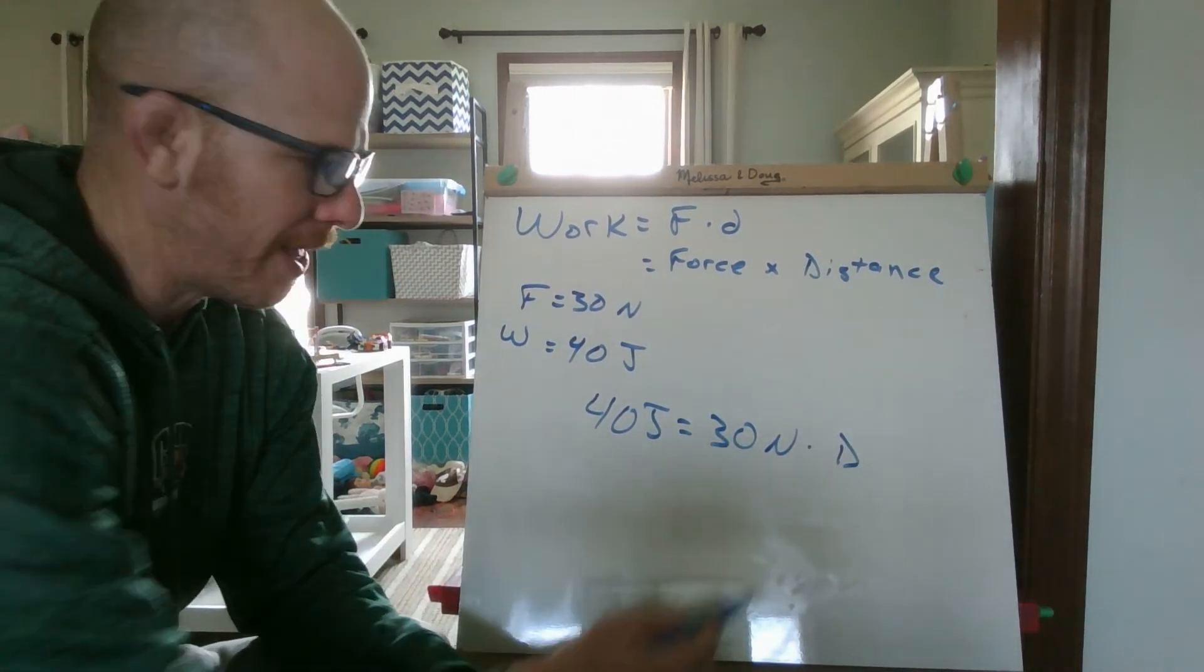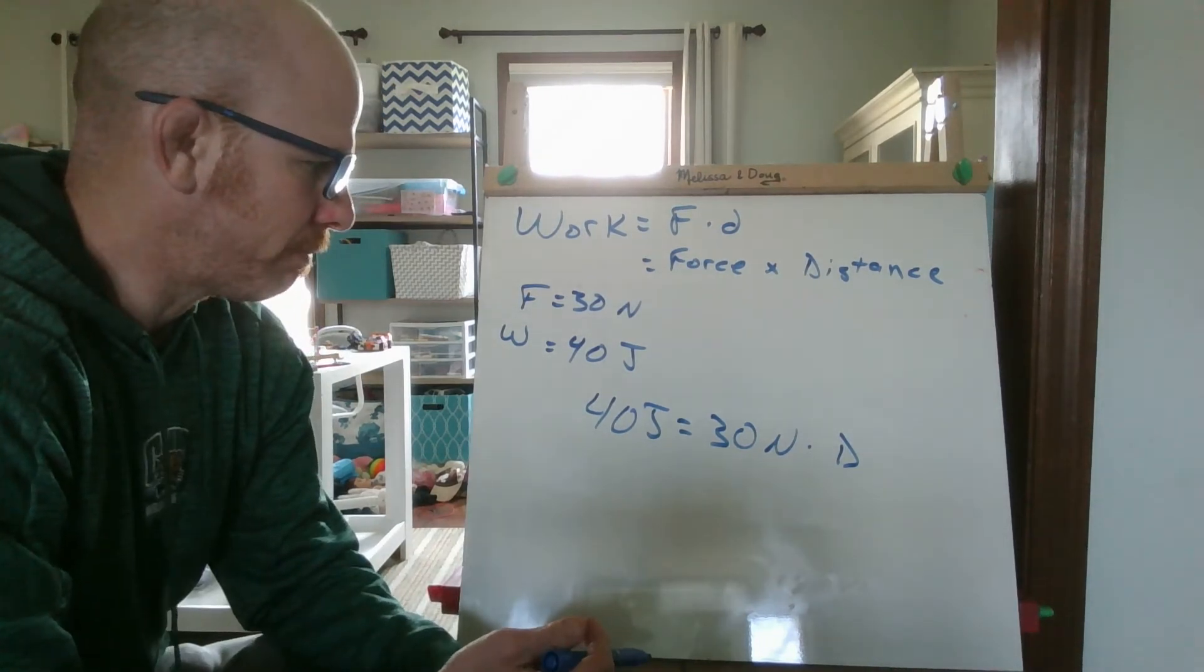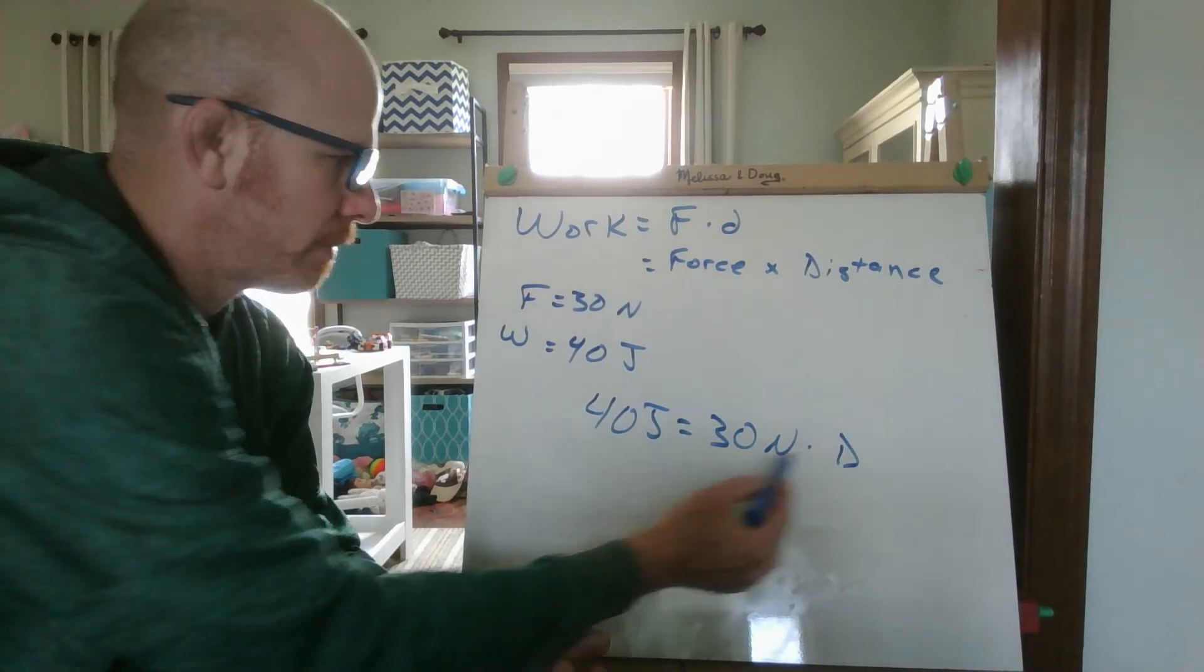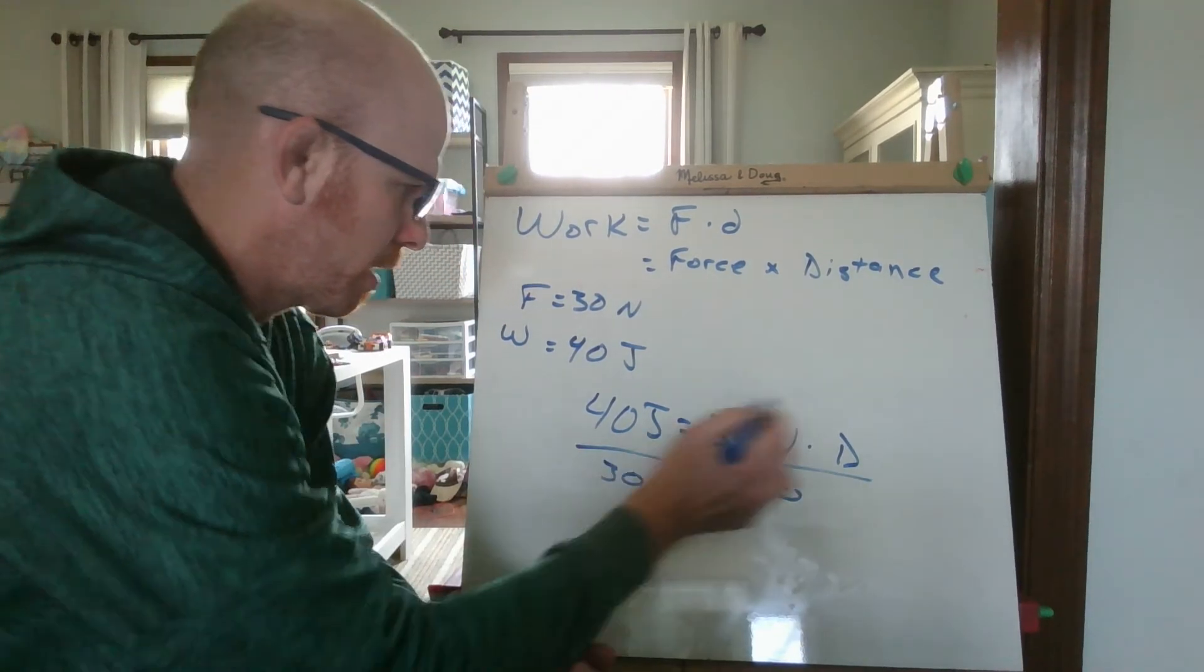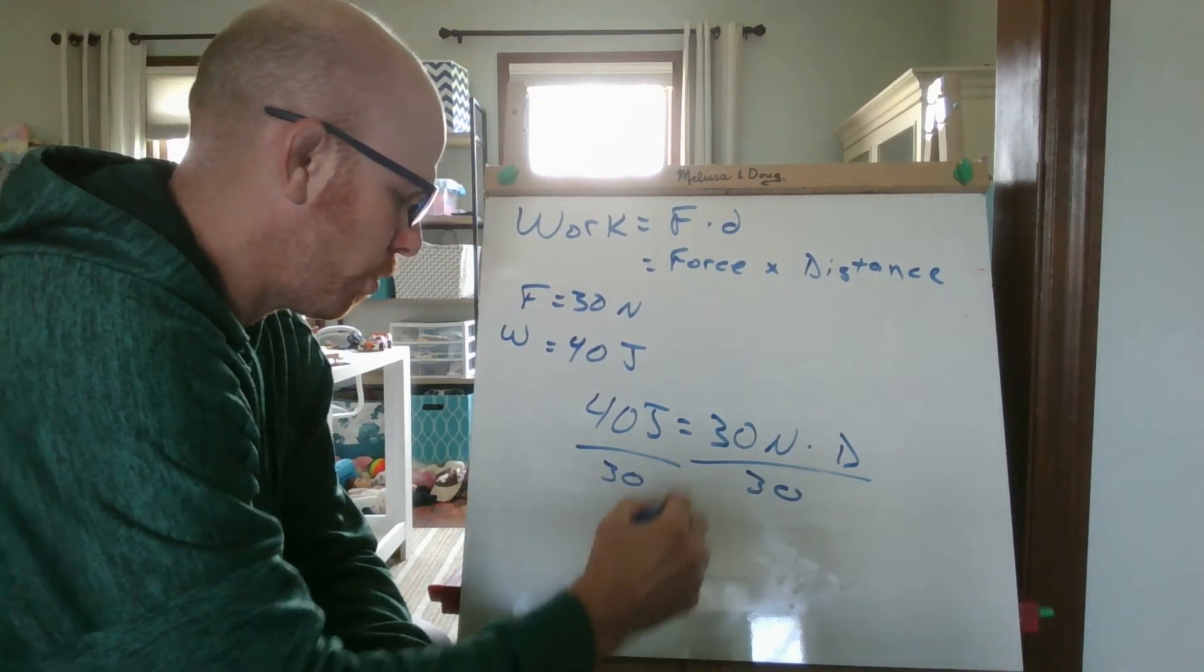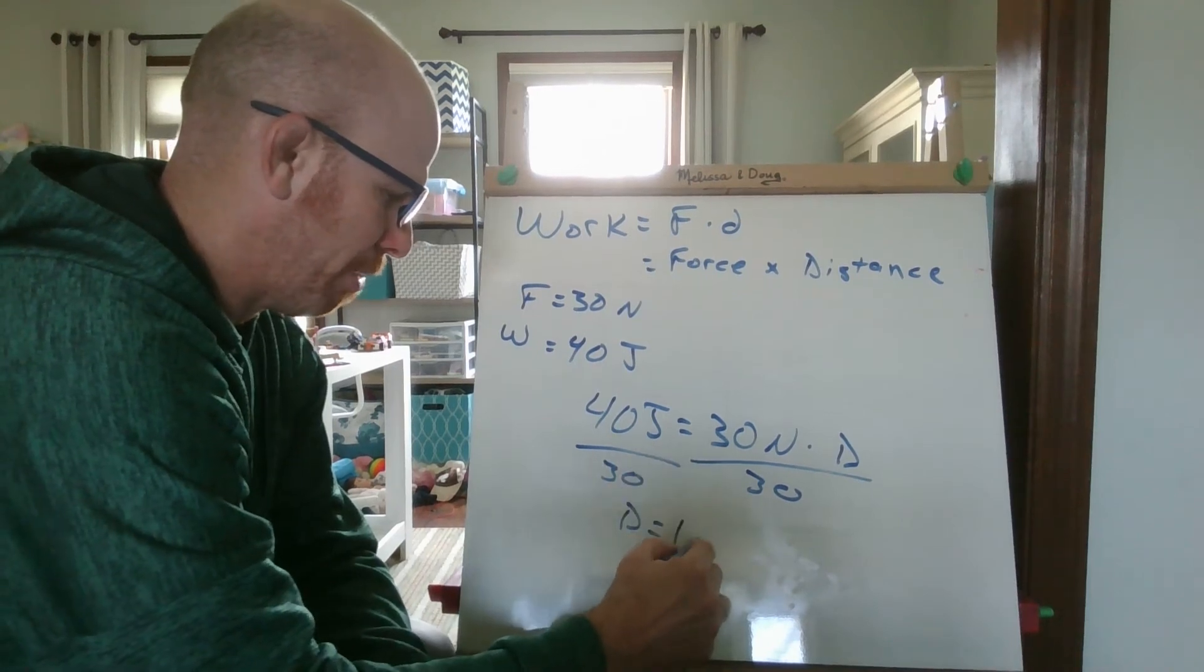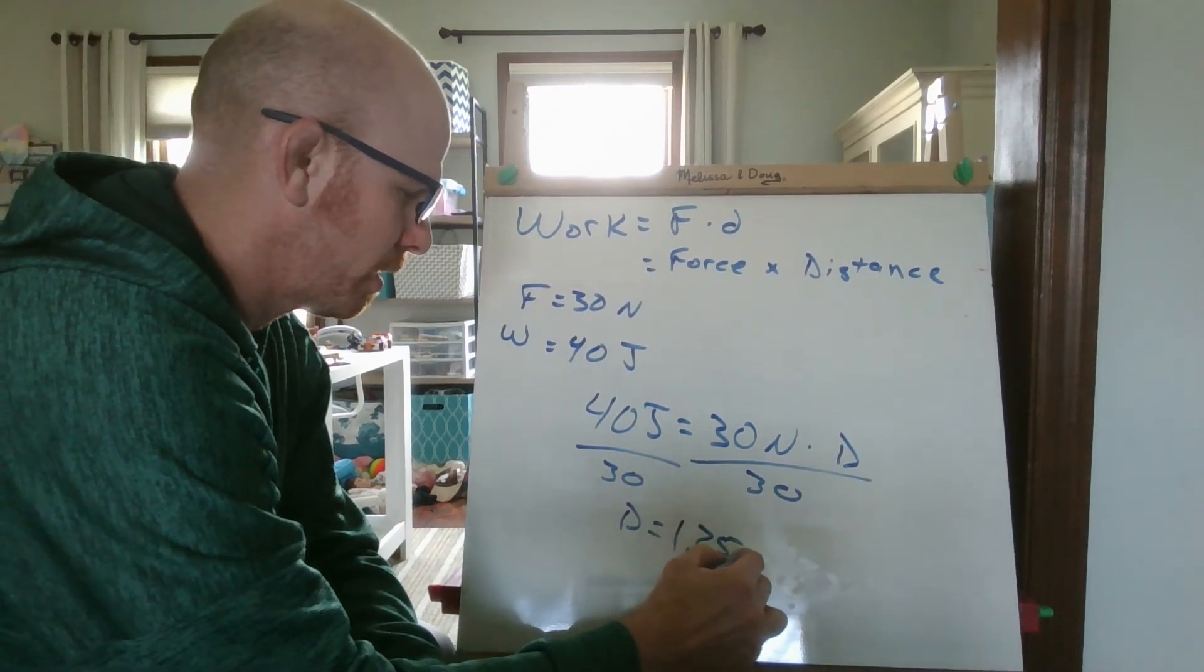I want to get the distance by itself. Well, I divide both sides by 30. I'm going to get the distance equals, and if I'm doing my math right, I believe this is 1.25 meters.